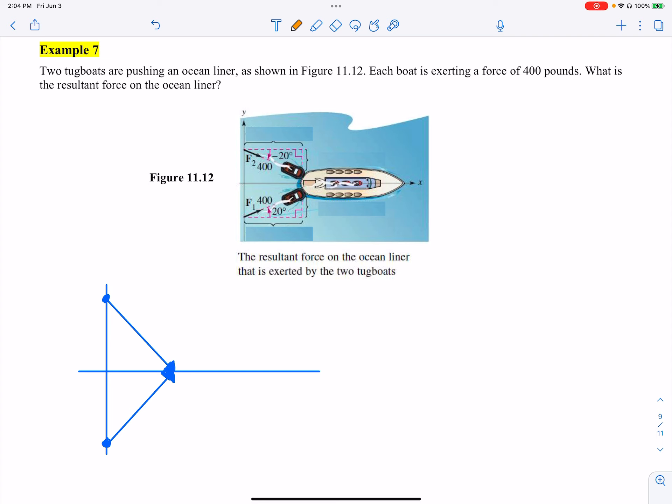These are tugboats pushing on this liner. If I say that F is the resultant force, like how much is actually the boat being pushed all together, I actually can find that resultant force by just adding all forces together, all forces acting on whatever the thing I'm looking at. If I add all forces together, I get the resultant force.